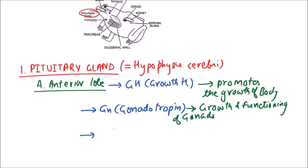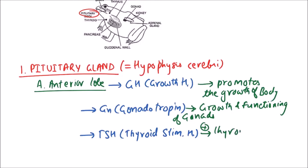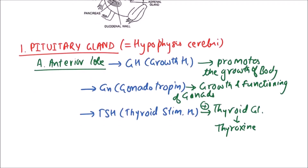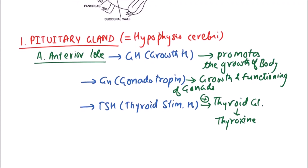The next hormone is TSH, that is thyroid stimulating hormone. It stimulates the thyroid gland in frog to release thyroxine, which is responsible for metabolism and also plays an important role in metamorphosis, converting the tadpole larvae into adult frog.